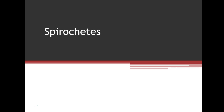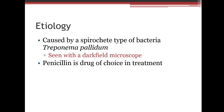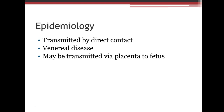Spirochetes are our next classification — they look like little spirals. Syphilis is caused by the spirochete Treponema pallidum. Penicillin is the drug of treatment. It is a venereal disease and can also be transmitted via the placenta to the fetus.